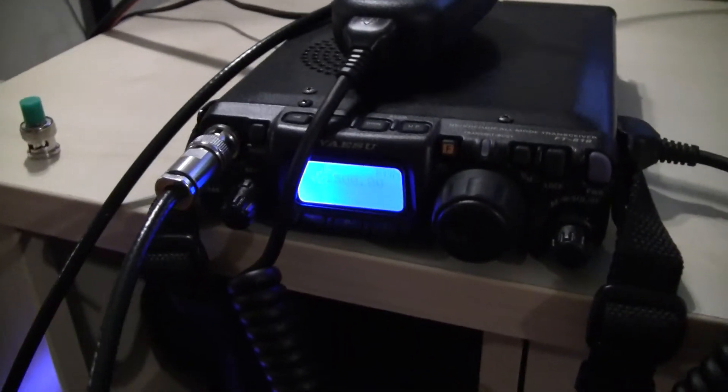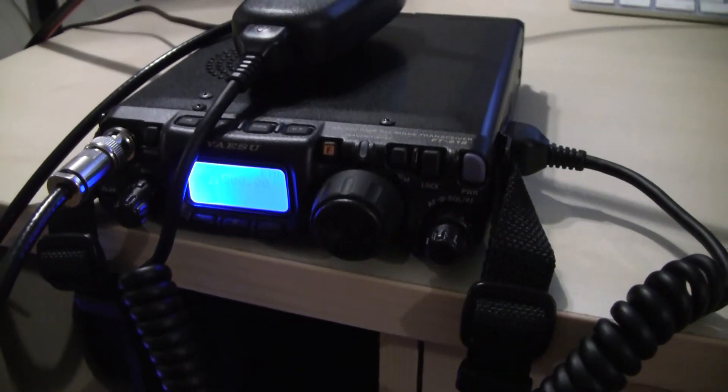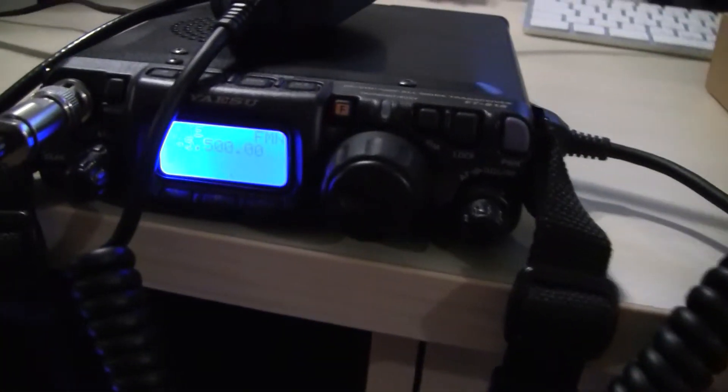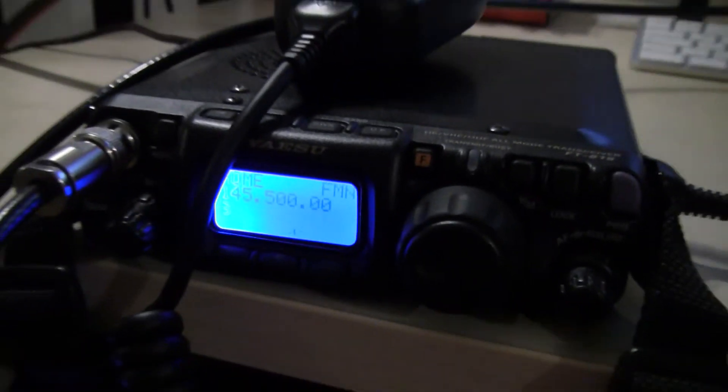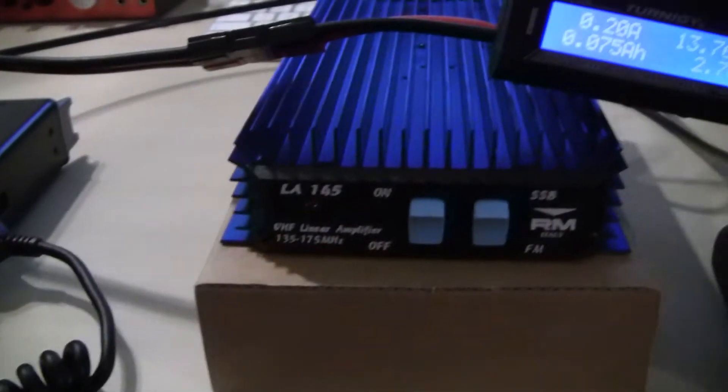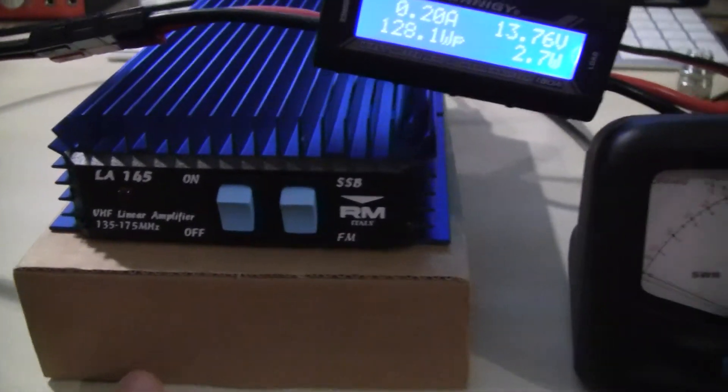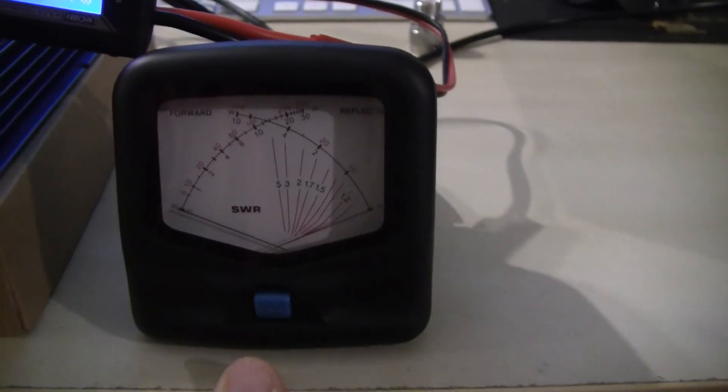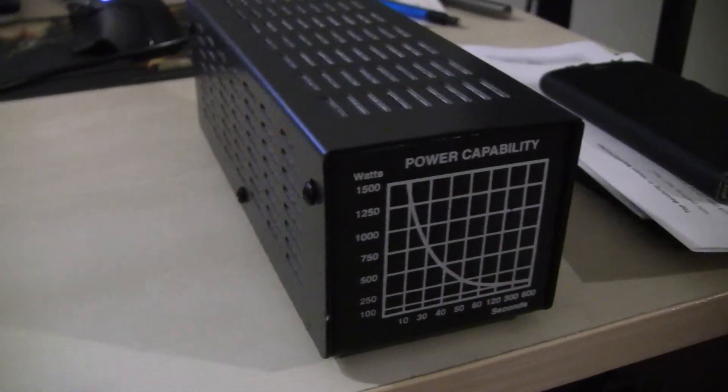I have here my FT818 setup on VHF on 2 meter band, 145.500 MHz, and going into the amplifier, which is currently turned off, over an SWR meter into a dummy load.